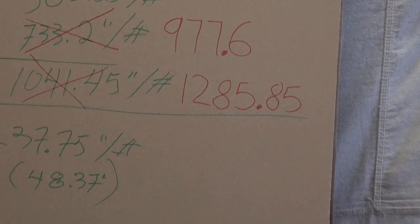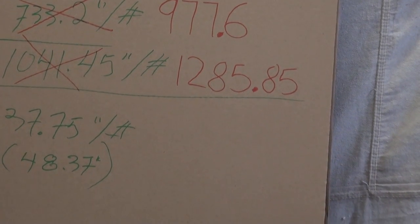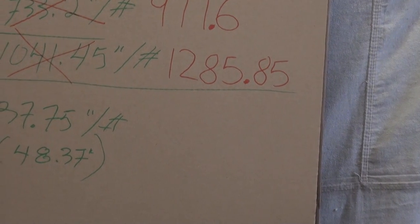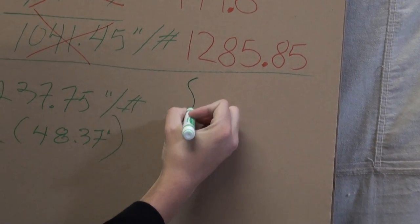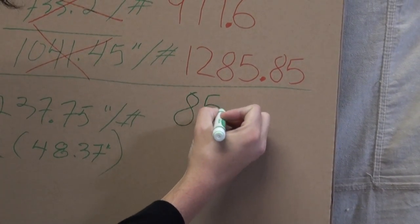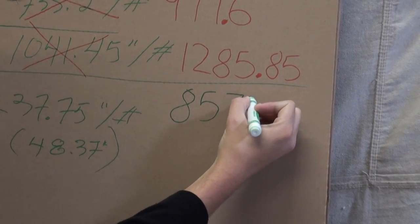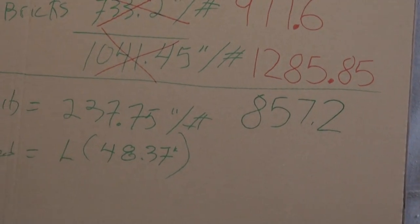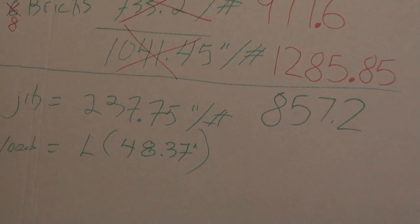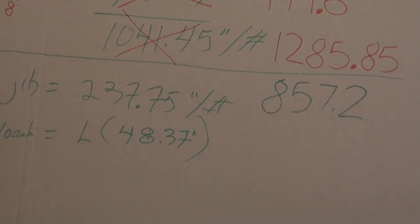And now to get the safety factor, we divide by 1.5, and that gets us 857.2. So this is our torque with the safety factor.